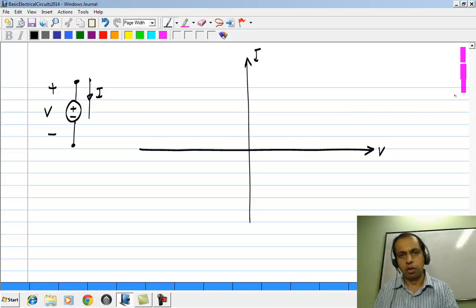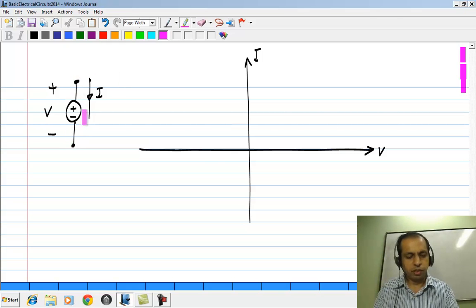It is generally common to draw current as a function of voltage, that is what we will be using for other elements. We could also draw V on the vertical axis and I on the horizontal axis. Now, as I just said, the property of a voltage source V is that it maintains a constant voltage between these terminals, this V will be a constant regardless of the current flowing through it.